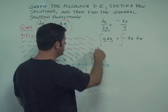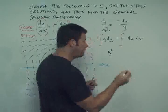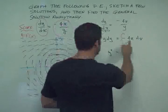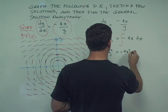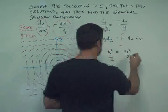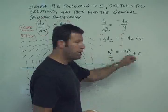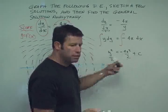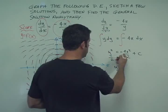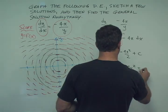What we do is move everything with x's to one side including dx, and everything with y's to the other side. So we get y dy equals minus 4x dx. That's just algebra. Now, because what we originally had was a derivative, we undo it by integrating both sides — which is only valid here because we're undoing the derivative. The integral of y dy is y squared over 2, and the integral of minus 4x dx is minus 4x squared over 2, plus a constant c.